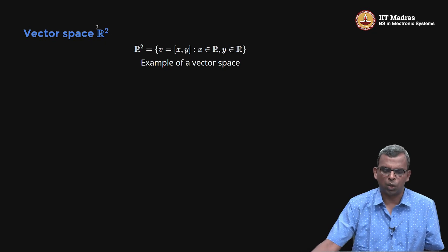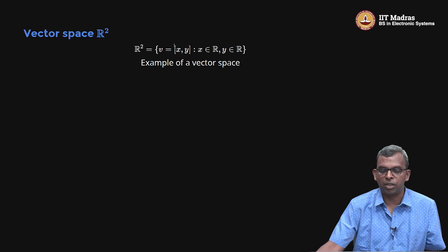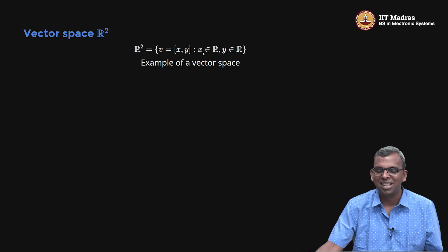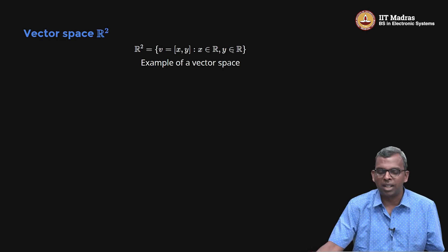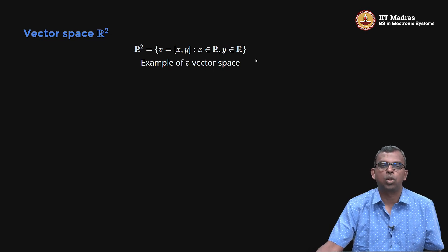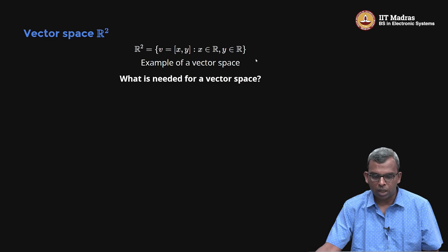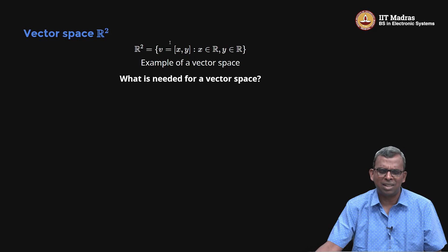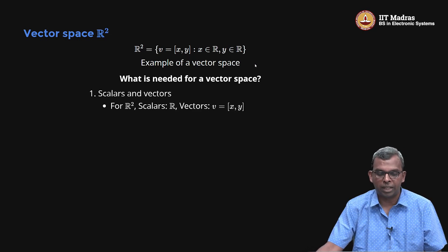What is this vector space R2? R2 is a set of vectors which we write as x comma y. Notice how I have shifted to the row notation — x comma y — where x and y are real. This ends up being an example of what is called a vector space. Now, what is needed for a vector space? What properties of R2 are crucial for the vector space?